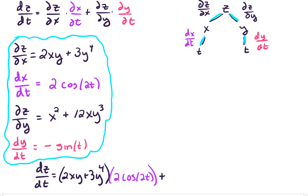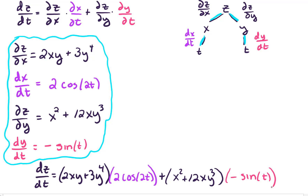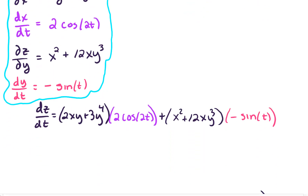So, putting that into our formula: dz/dt equals (2xy plus 3y to the fourth) all times 2cos(2t), plus (x squared plus 12xy cubed) times negative sine t. Now, it would be really nice to convert everything to be in terms of t, so we could take this one step further — though it'll get a little bit complicated.